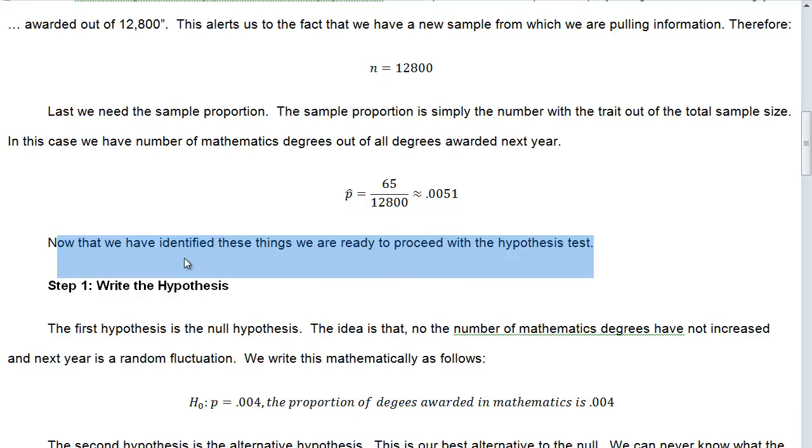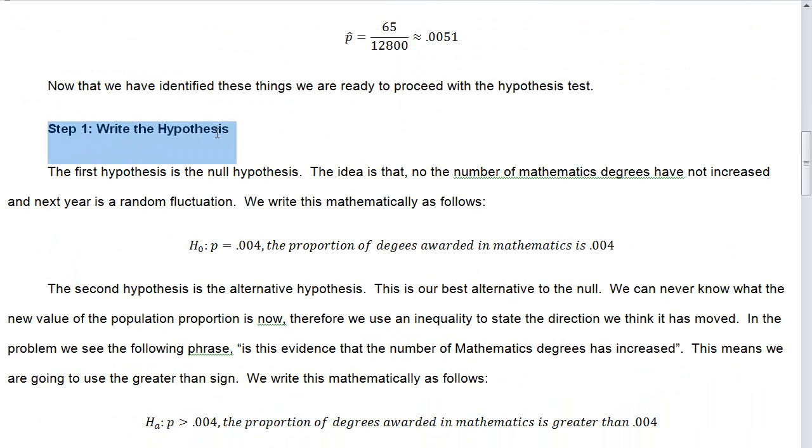This is like step zero. Now we're actually getting ready to do step one, write the hypothesis. The first hypothesis is the null hypothesis. The idea is that no, the number of mathematics degrees have not increased, and next year is a random fluctuation. We write this mathematically as follows: H-naught is P equals 0.004.